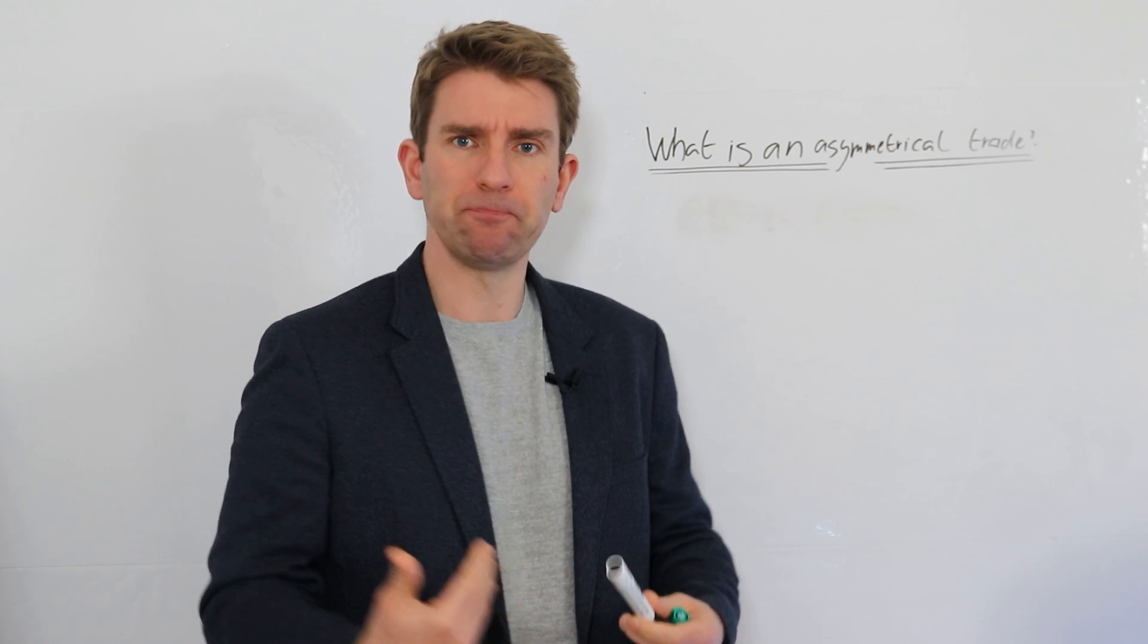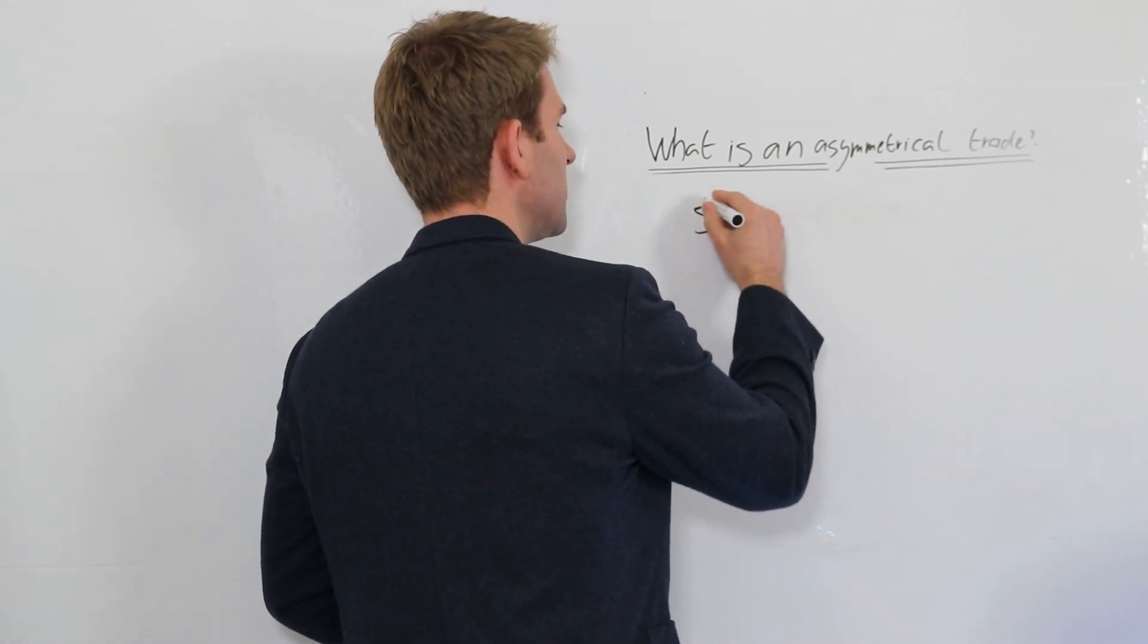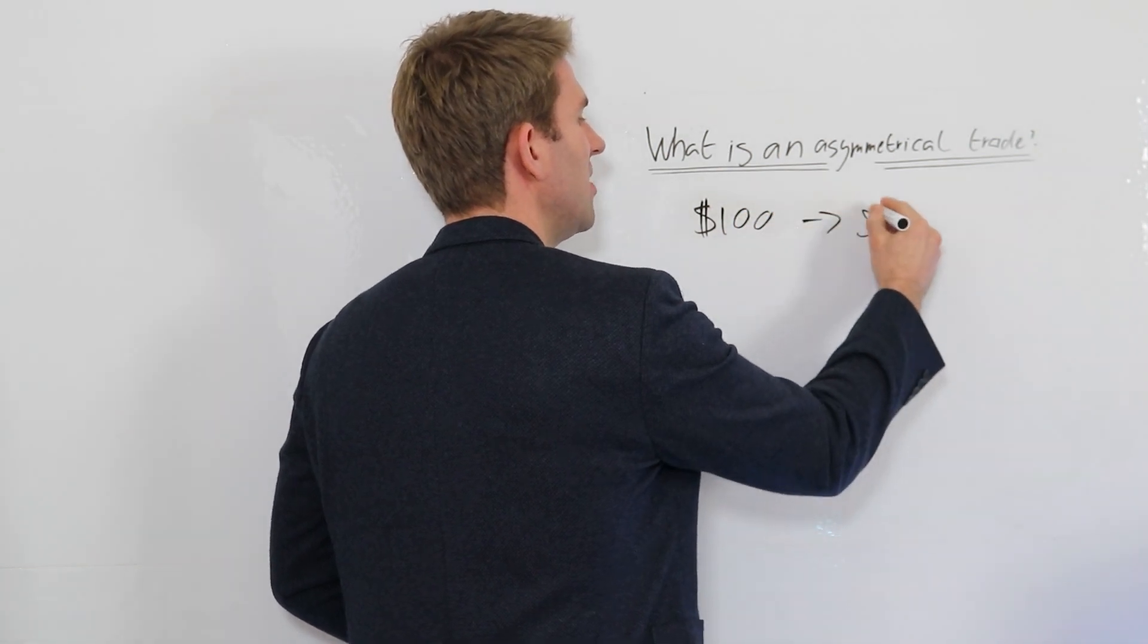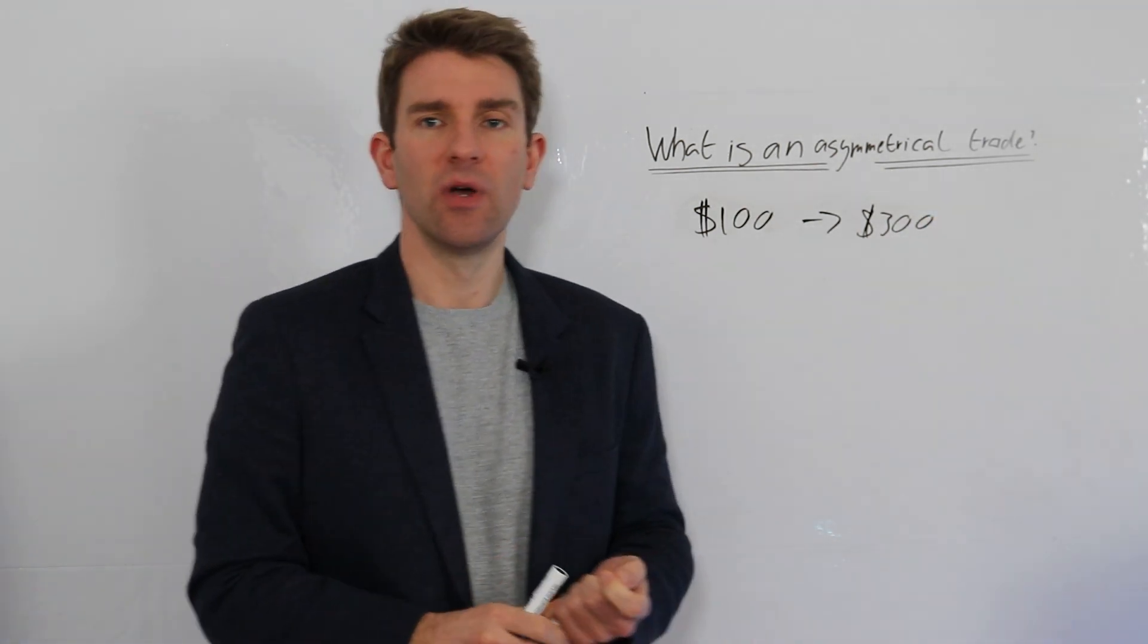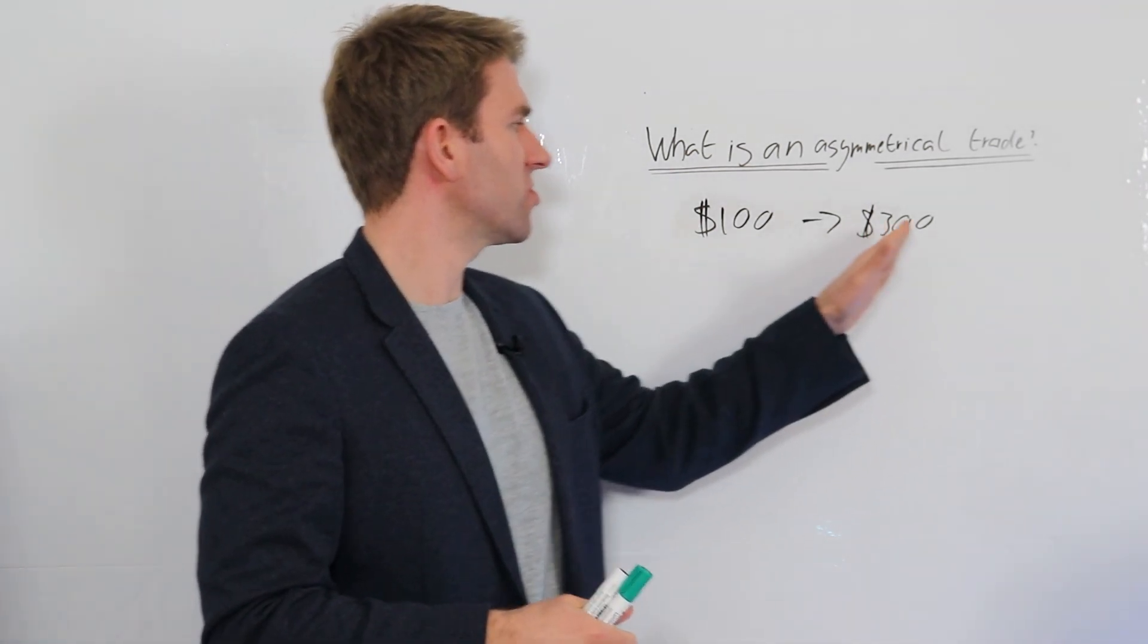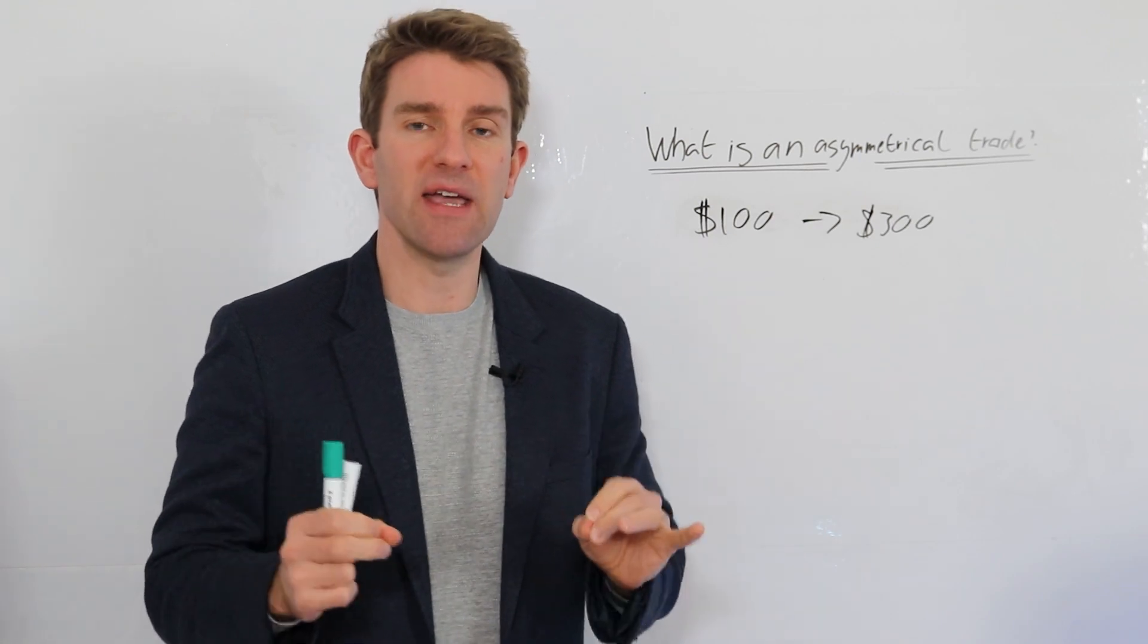An asymmetrical risk trade basically means this: if you're risking a hundred dollars to make three hundred dollars, you would have a three to one risk to reward ratio, or reward to risk actually, technically, because you're risking a hundred dollars to make three hundred.